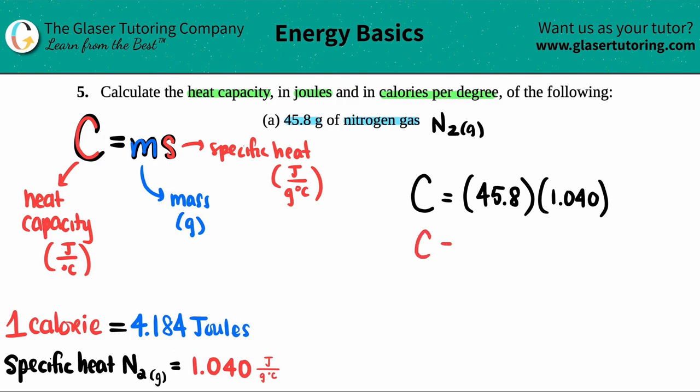So let's calculate. C equals heat capacity of nitrogen gas, 45.8 times 1.04. And since we started off with three sig figs, we should end with three sig figs. So in this case, it's 47.6. And the unit that comes first is the joule. So this would be joule per degree Celsius. And that's your first answer.